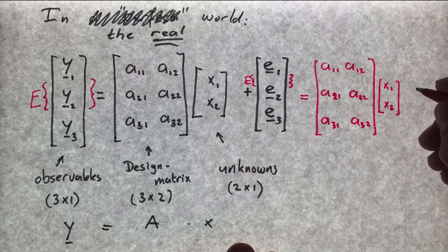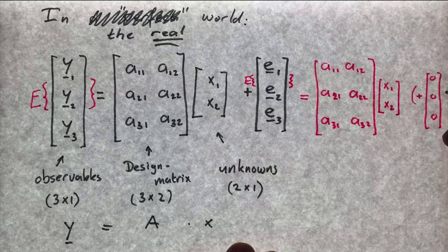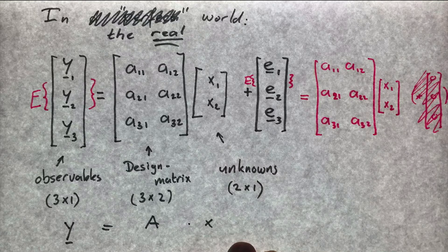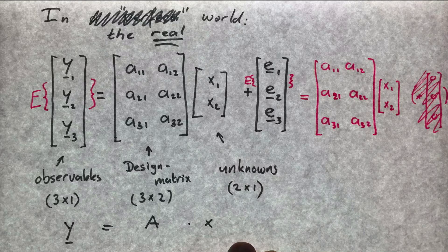Since the expectation operator is only applicable on stochastic variables, we apply it to the vector of errors. And as we just saw that this expectation is equal to zero, we can then remove this part of the equation.